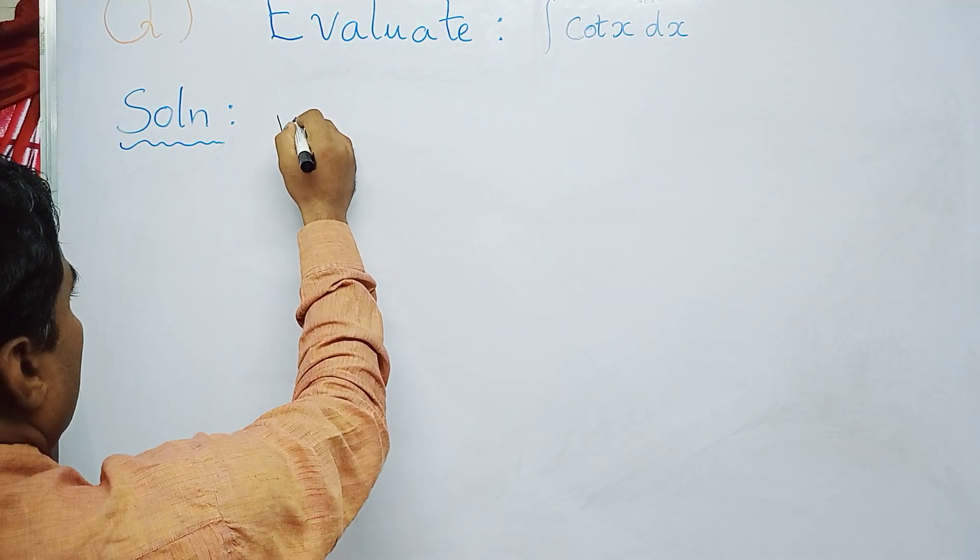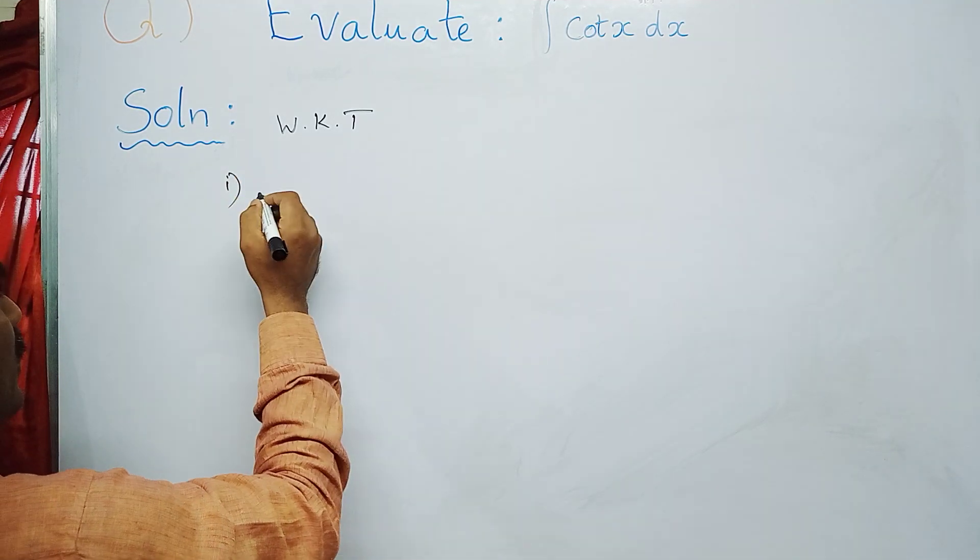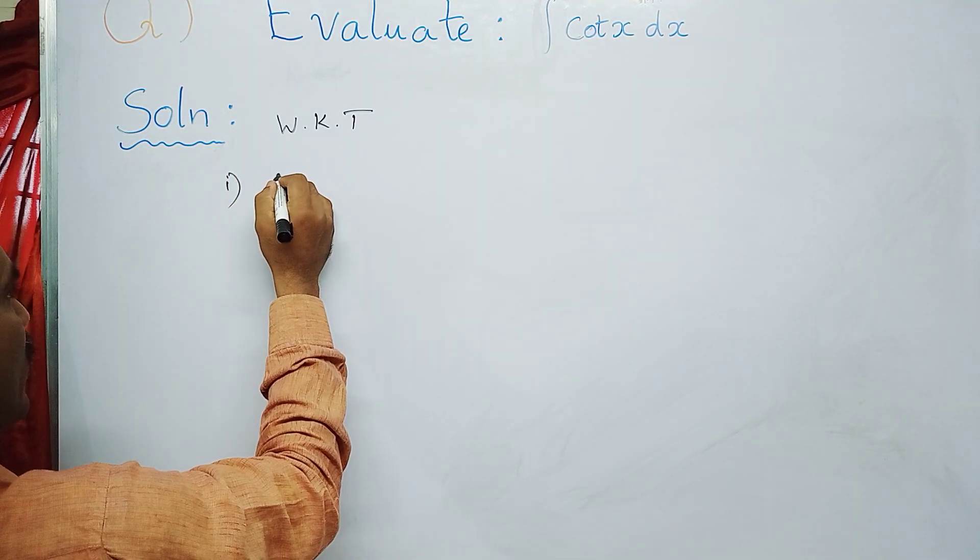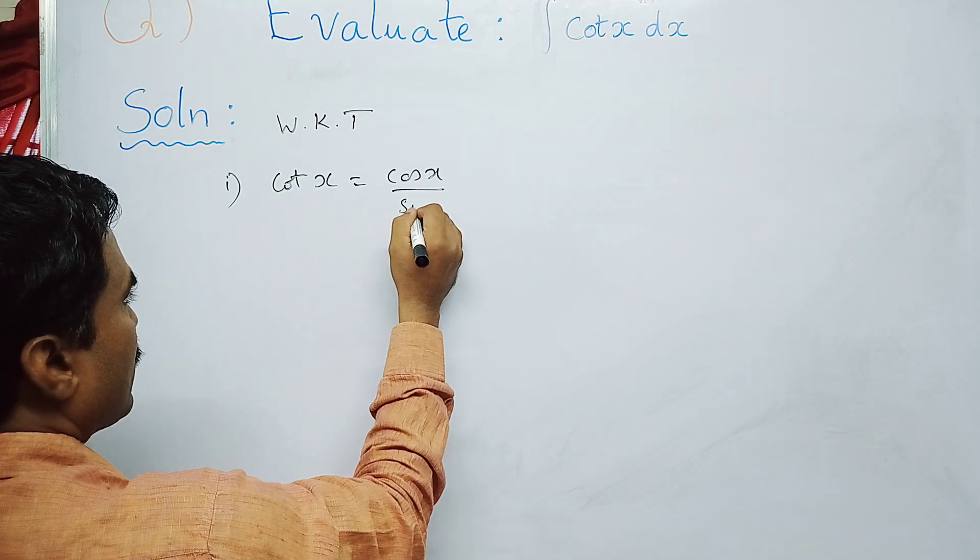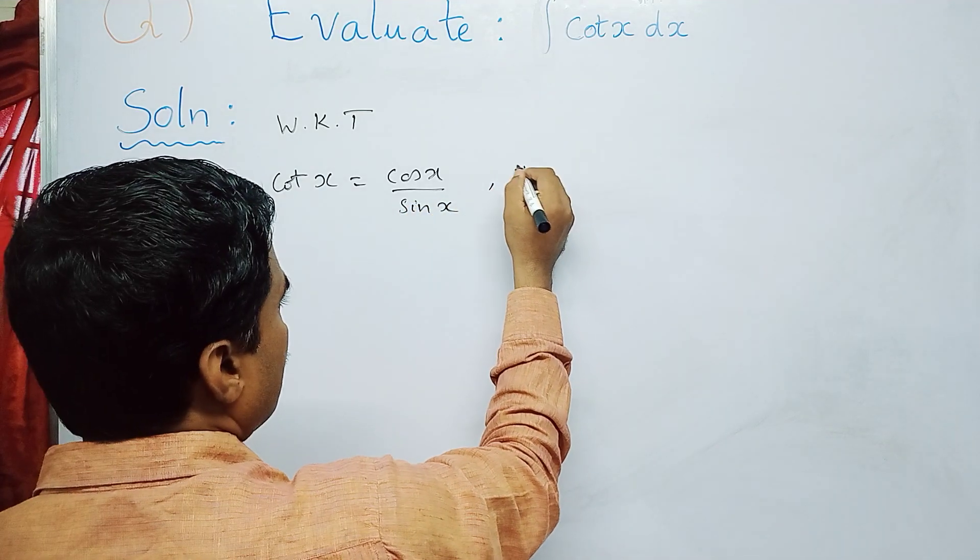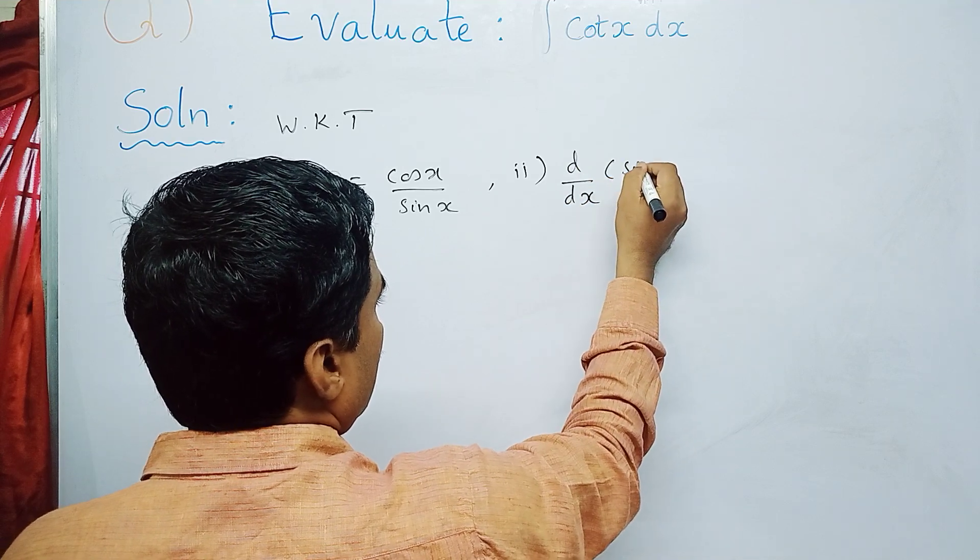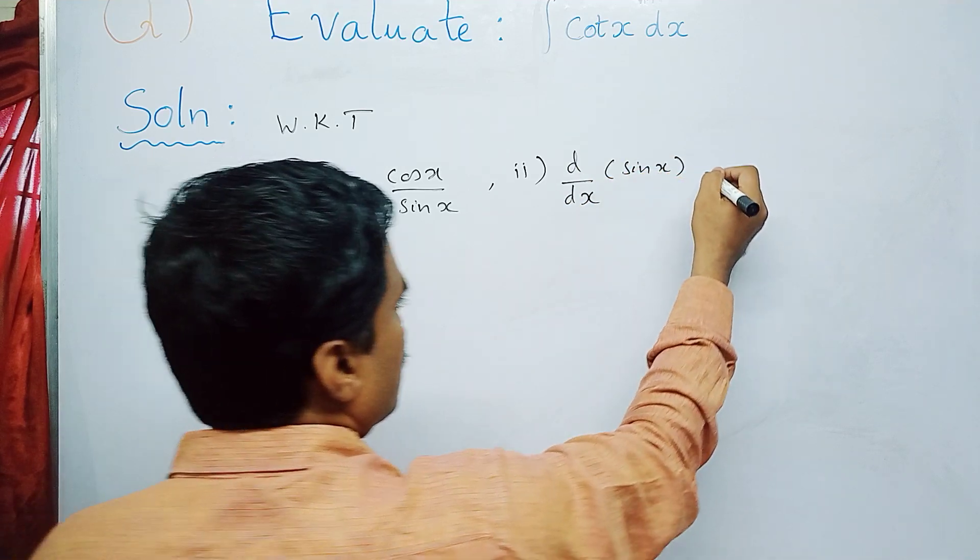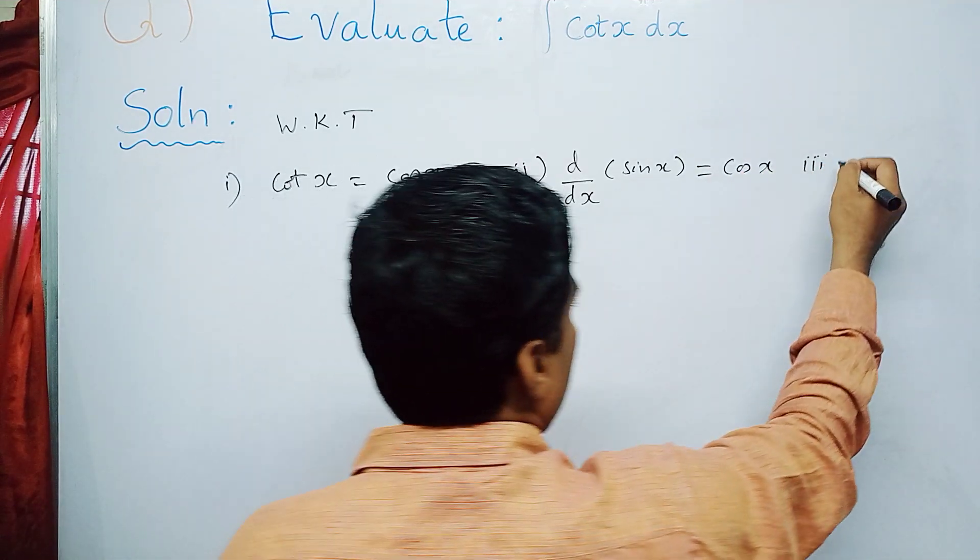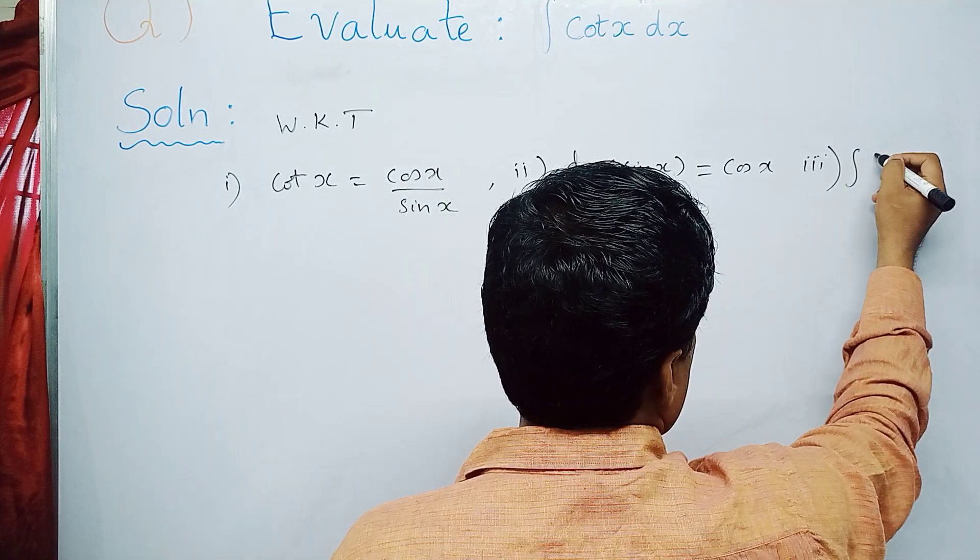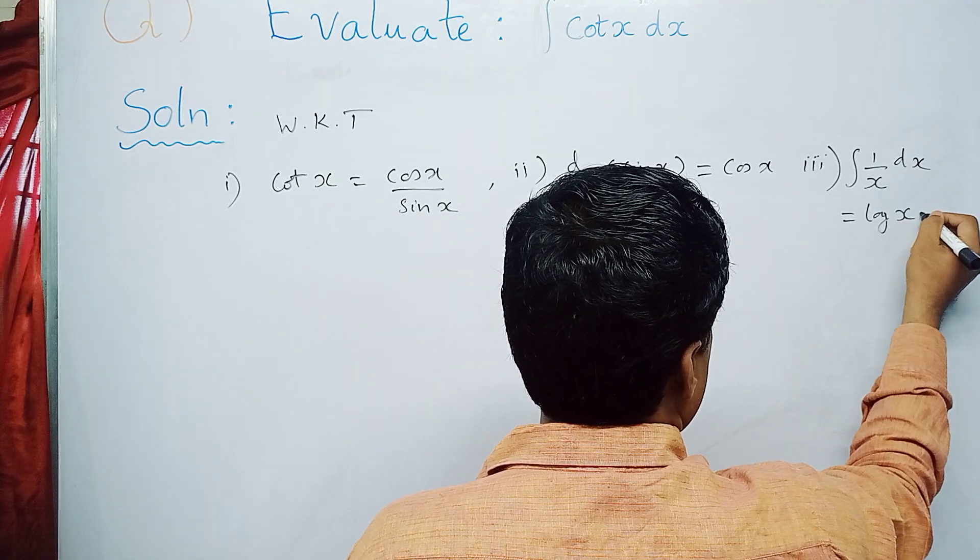The first formula: cot x can be written as cos x / sin x. The second one: we are going to use the derivative formula for sine x, that is d/dx(sin x) = cos x. And the third one: we are going to use the integral formula, that is integral 1/x dx = log x + c.